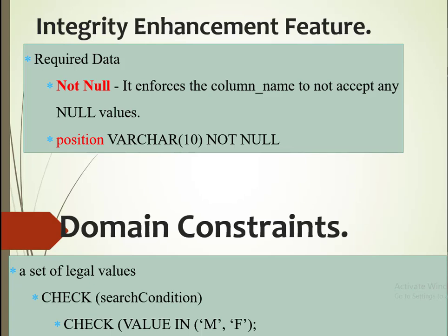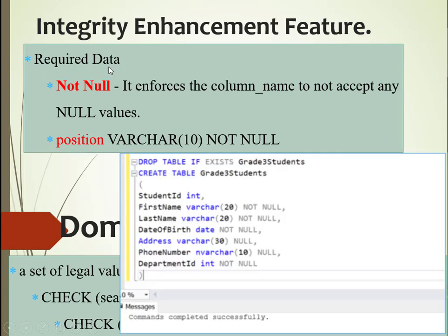We need to look at a few constraints that will always be incorporated every time we are using field names. One of these is what we've heard called an integrated constraint. In this given case, when you need to force that data must be populated in a given column, we normally use NOT NULL. NOT NULL implies that in that particular column, it cannot accept null values.